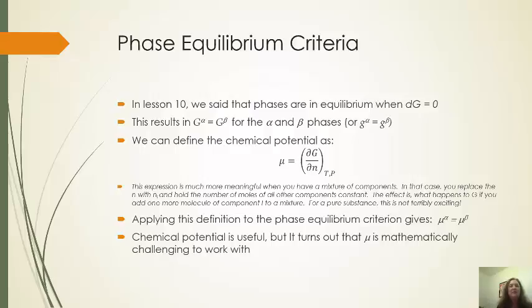So, in lesson 10 we talked about the phase equilibrium criteria. And what we basically said is that phases are in equilibrium when the change in the Gibbs energy is equal to zero.